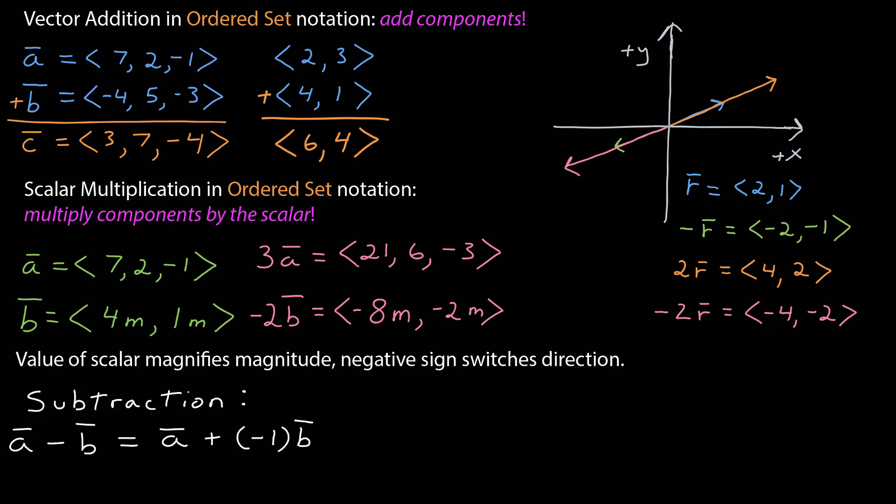Now subtraction. Remember, subtraction, a minus b, is simply a added to negative 1 times b. So we just use our rules for vector addition and multiplication by a scalar.